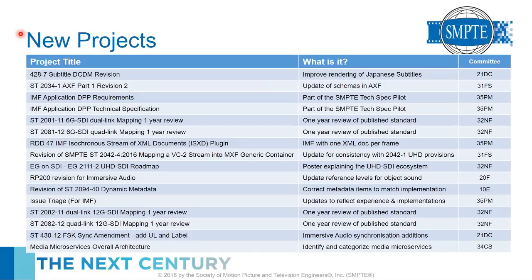Within the standards community we organize work using a concept called projects — we try to create one project per document. Related projects may have a controlling project to oversee them. A project monitors a group of people doing work: it might be one person revising a document, or it could generate a working group, drafting group, and study group. A project is really the way we monitor work going on within SMPTE.